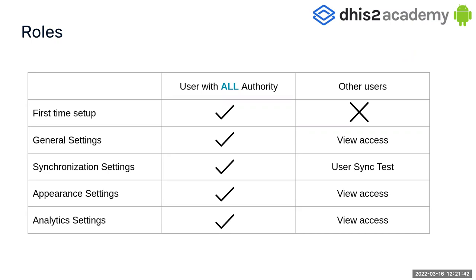If you have all authorities, you can go through general synchronization, appearance, and analytics settings, and you can create or delete these settings. Otherwise, if your user does not have all authorities, you cannot do the first time setup and you can only have access in view mode. For synchronization settings, there is a subsection called user sync test, and for user sync test only, it doesn't matter which kind of user you are logged in as — you can run or try this section.